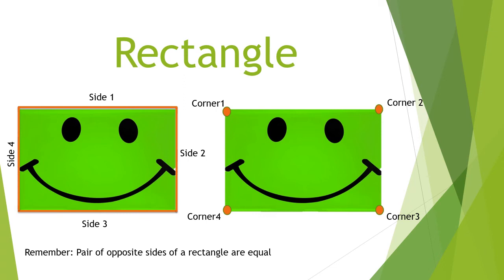Children, now let's count the corners of a rectangle: corner 1, corner 2, corner 3, and corner 4. A rectangle has four corners. So we can say that a rectangle has four sides and four corners, just like a square.